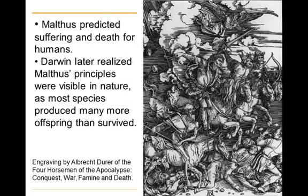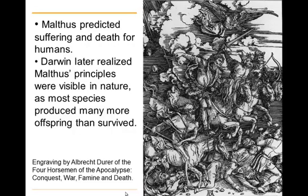Charles Darwin later read Malthus's prediction of suffering and death for humans and realized those same principles were visible in nature — that many species produced more offspring than could survive and that there was a struggle for survival. The artwork on this slide is an engraving by Albrecht Dürer of the Four Horsemen of the Apocalypse: Conquest, War, Famine, and Death.